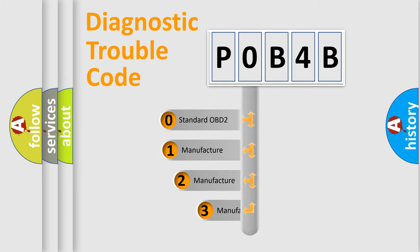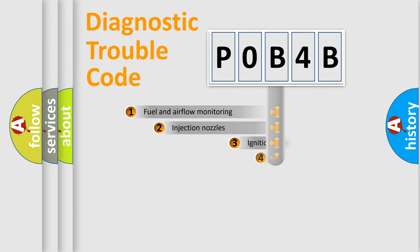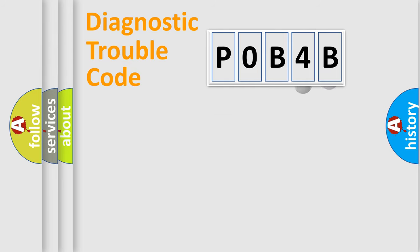If the second character is expressed as zero, it is a standardized error. In the case of numbers 1, 2, 3, it is a more prestigious expression of the car specific error. The third character specifies a subset of errors. The distribution shown is valid only for the standardized DTC code.